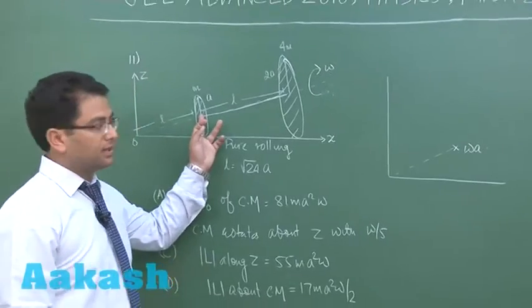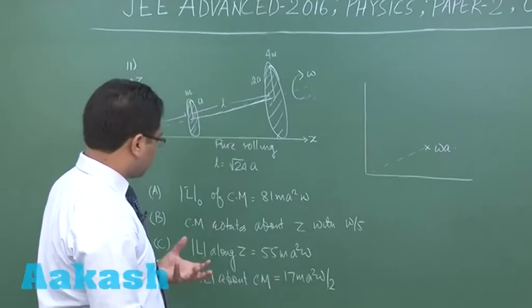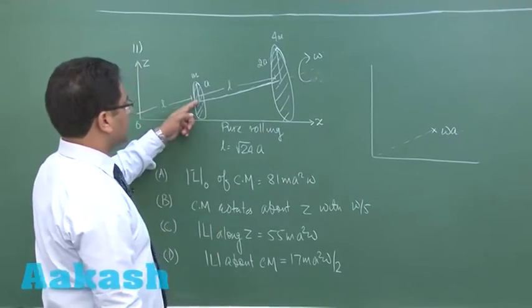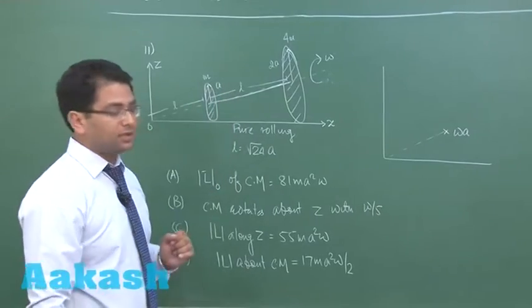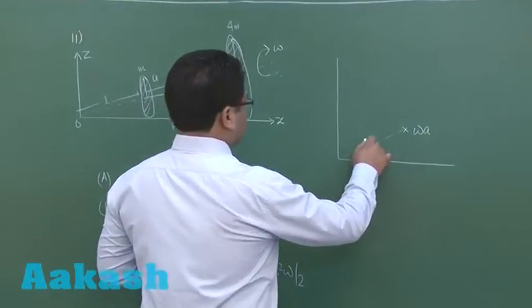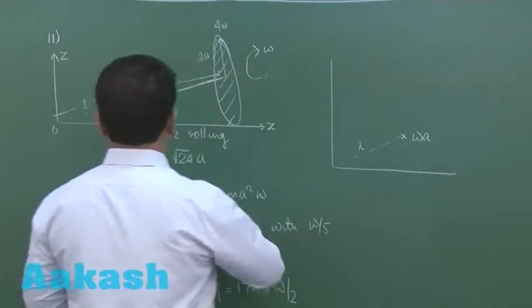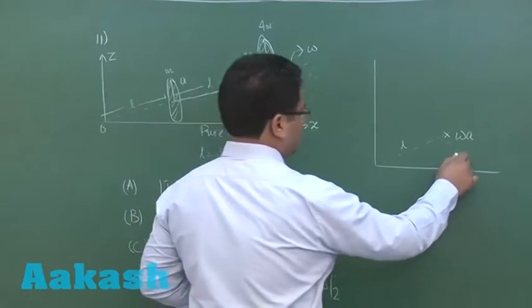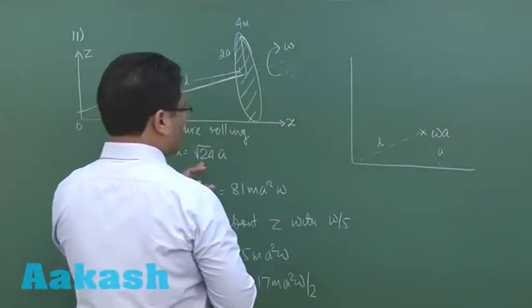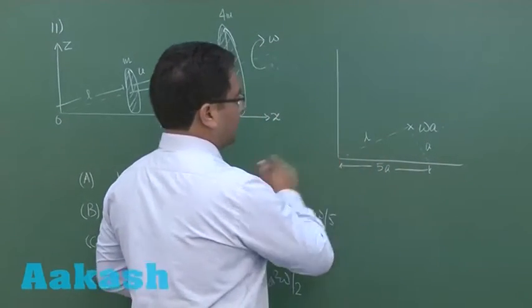This center of mass—and you would see that I would like to calculate first of all the angular velocity. The angular velocity of this itself would be the angular velocity of the center of mass. Now you would see this length is L, and here if you see this part that is A, and this L is given to be root of 24A, so quite obviously this distance would be 5A.